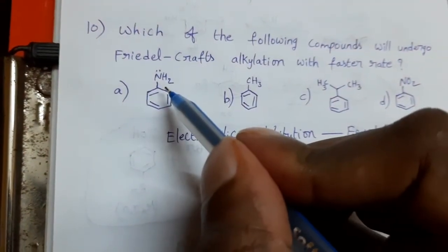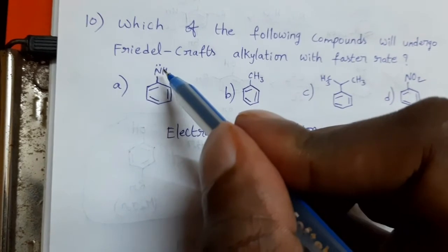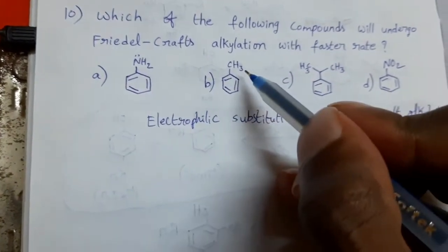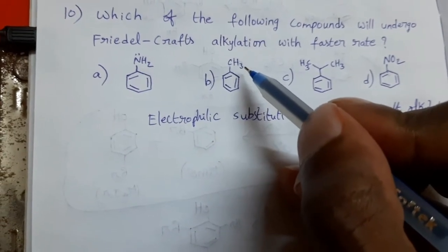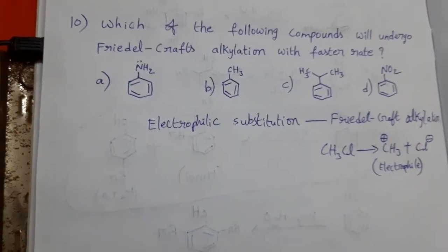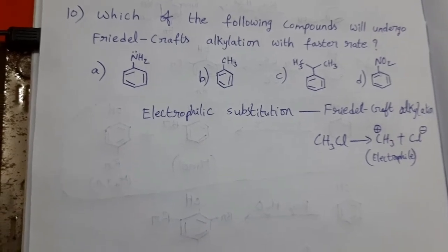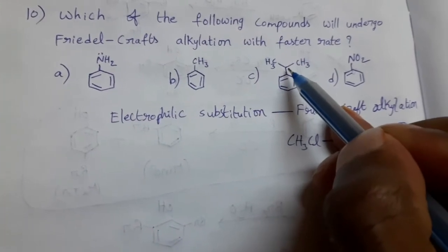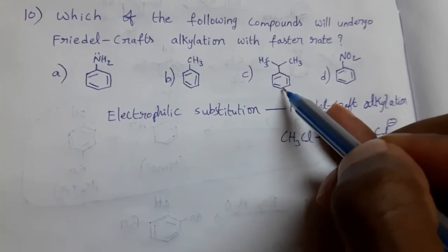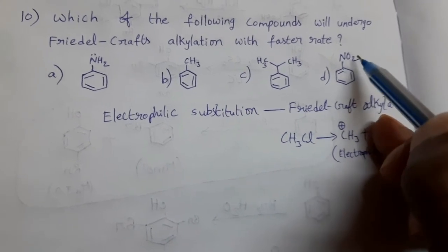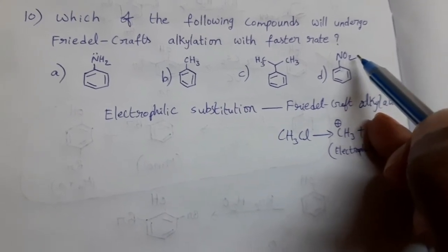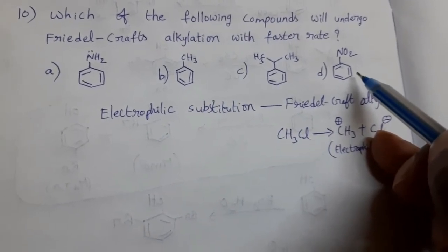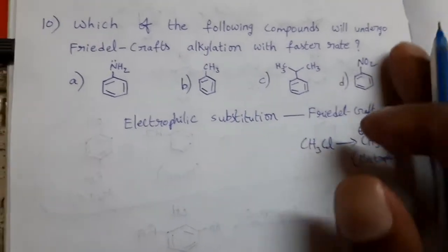Aniline can donate — nitrogen has a lone pair of electrons it can donate to the benzene ring, providing more electron density. CH3 can also provide electron density to the benzene ring by the positive inductive effect and hyperconjugation. The propyl group's carbon can also provide electron density. But NO2 is an electron-withdrawing group, so nitrobenzene cannot undergo Friedel-Craft reaction — it is not our answer.